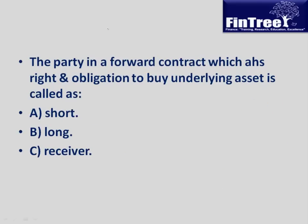Question 1: The party in a forward contract which has the right and obligation to buy the underlying asset is called what? The party which agrees to buy is called the long party; the party which agrees to sell is called the short. There is no such party as 'the receiver' in a forward contract.